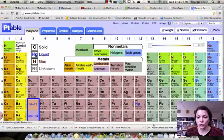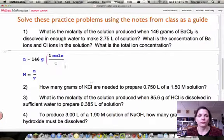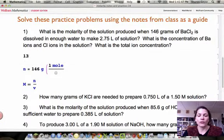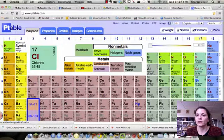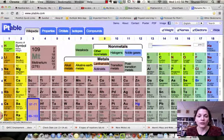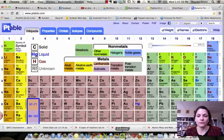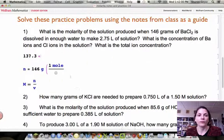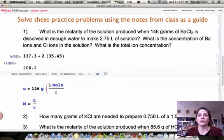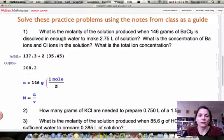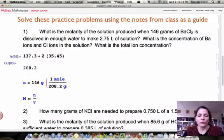So let's go to P table and look it up. 137.3 for barium. Chlorine is 35.45. Two times 35.45. And now we have the molar mass of barium chloride. So we can use that. 208.2 grams.